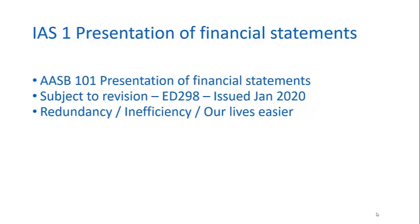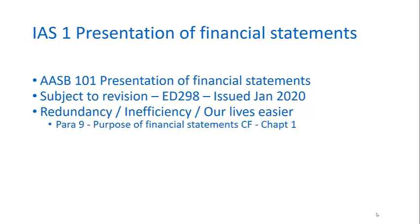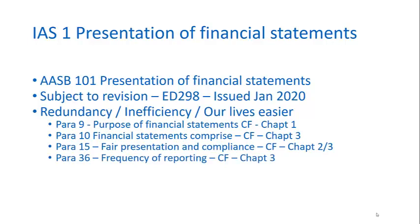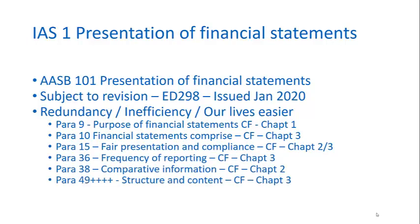I'd like to draw your attention to how IAS 1 might easily have been incorporated into the framework. For example, paragraph 9 could have been in paragraph 1 on the purpose of financial statements; what financial statements comprise could be incorporated in paragraph 3; fair presentation in chapters 2 and 3; frequency reporting in chapter 3; comparative information in chapter 2; and structure and content in chapter 3. It's for this reason that IAS 1 and the conceptual framework should be thought of as part of a more comprehensive and cohesive framework.